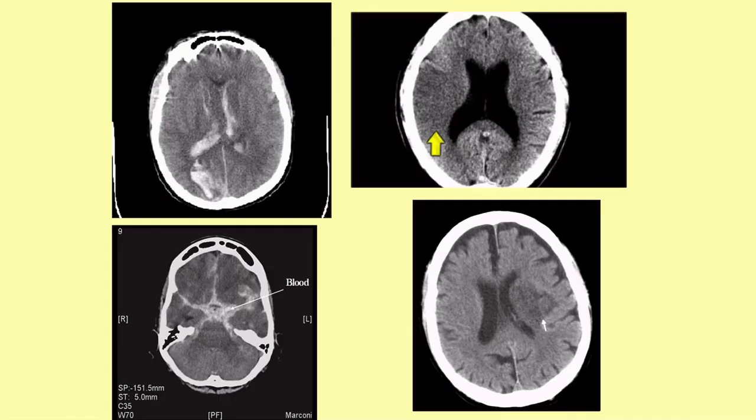On CT, hemorrhagic strokes show bleeding into the ventricles, and subarachnoid hemorrhage has a characteristic appearance you should recognize. Ischemic stroke can be very difficult to see — often when a patient presents within the first hour or two, you're not going to see anything on CT; it looks normal. It's not until maybe one, two, or three days afterwards that you really start to see features of the stroke: hypoattenuation, where the affected area starts to look darker on CT.